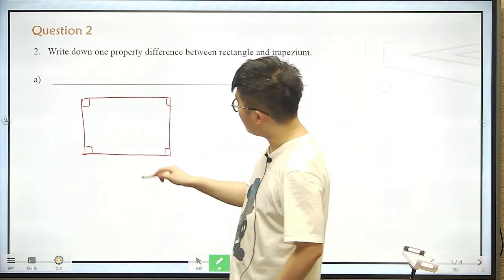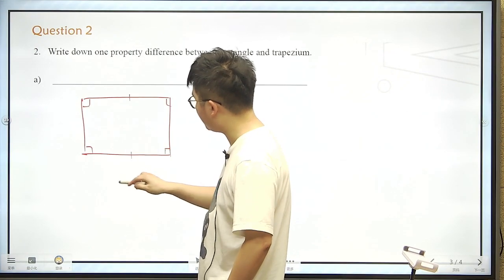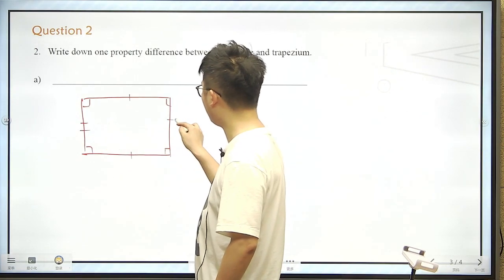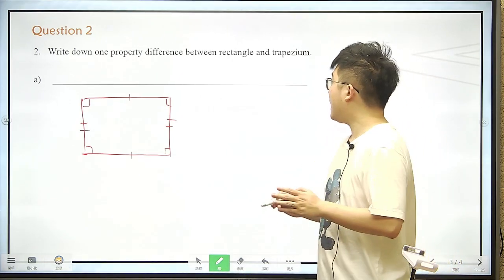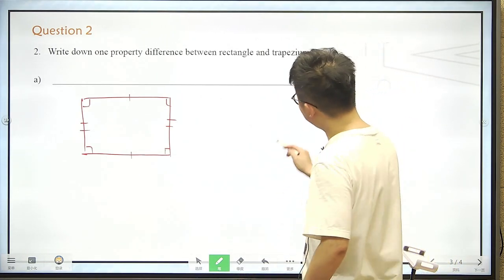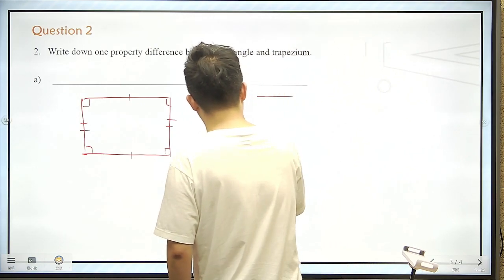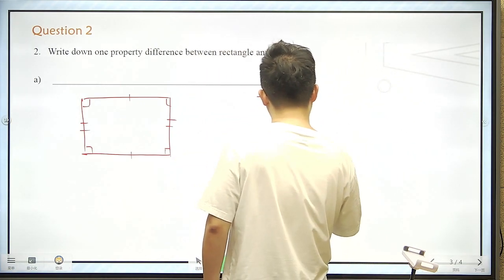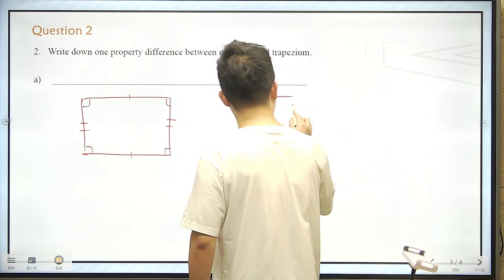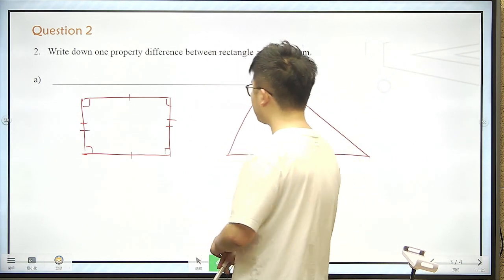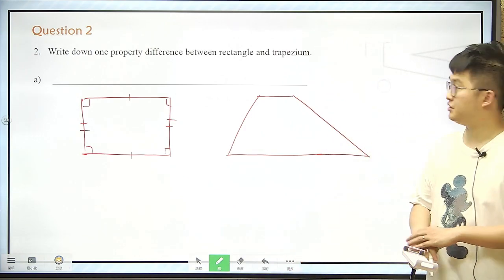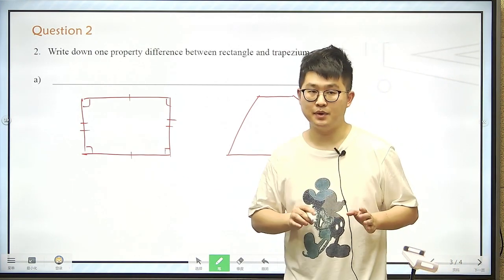Something like this. And we know that this side is equal to this, and this is equal to this. So this is a rectangle. And what about trapezium? Trapezium looks like this. We have an upper line, we have a bottom line, and we have two sides. This is a trapezium.